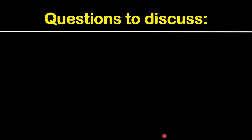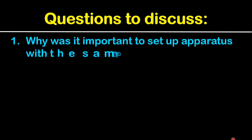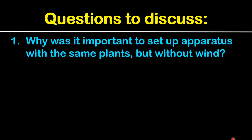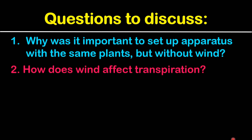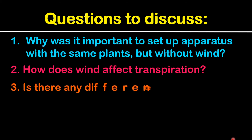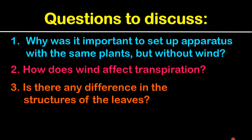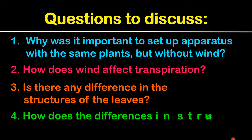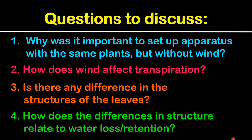Some questions for discussion: Why was it important to set up an apparatus with the same plants but without wind? How does wind affect transpiration? Is there any difference in the structures of the leaves? How do differences in leaf structures relate to water loss or water retention?